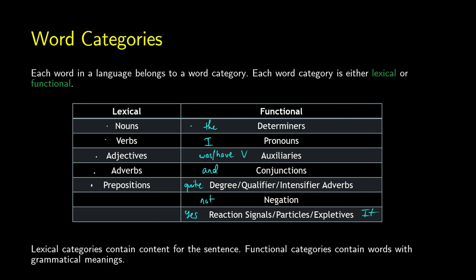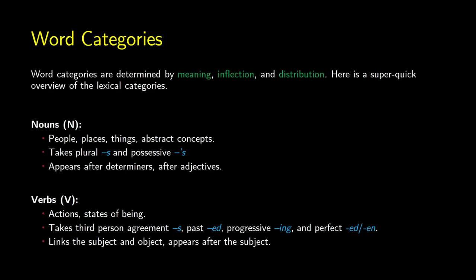To keep the difference clear: lexical words have some content for the sentence — they talk about location, the person, the action, something you can visualize — while functional words are more about the grammar. Determiners indicate specificity; pronouns refer to something in the real world or to another word; auxiliaries support the main meaning of the phrase. You can determine word categories by meaning, inflection, and distribution — where the word sits in relation to others, like in syntax.